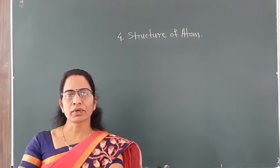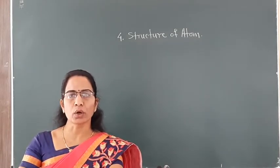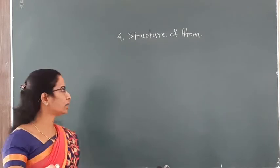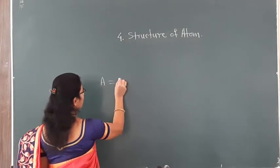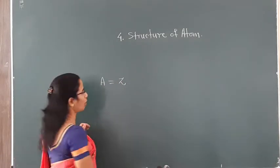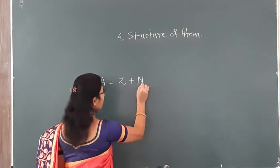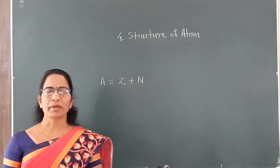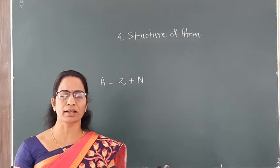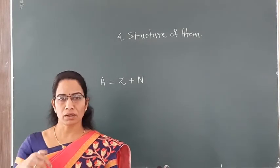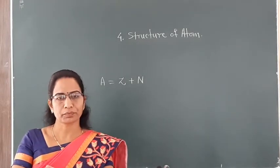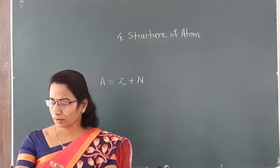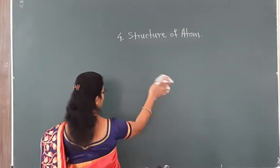We have also seen how to determine the atomic mass of atoms. The atomic mass is simply the summation of the number of protons and the number of neutrons present in the nucleus. Using this formula, we calculated the atomic masses of some atoms. Isotopes are seen to have different atomic masses.